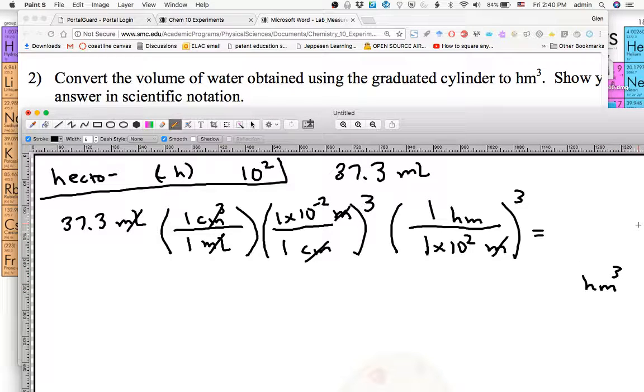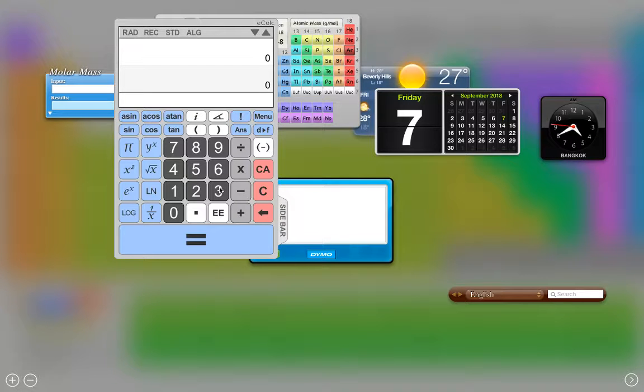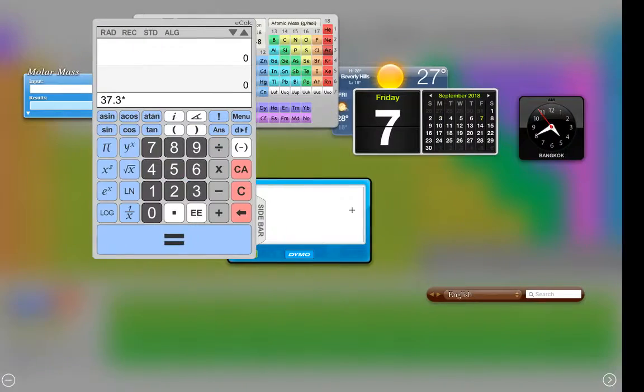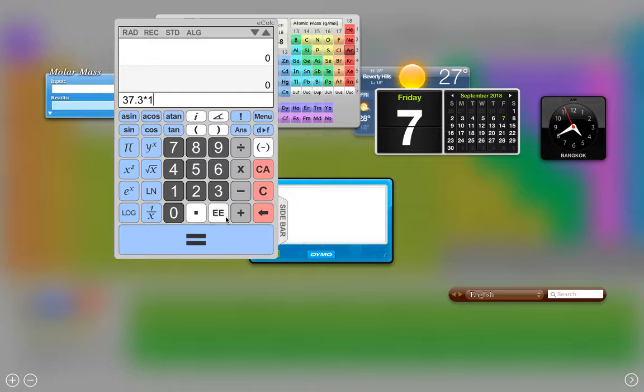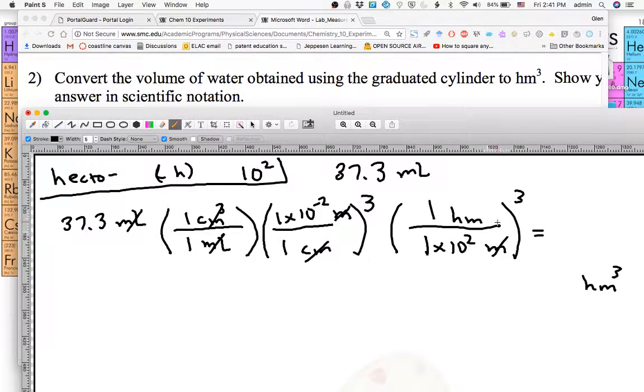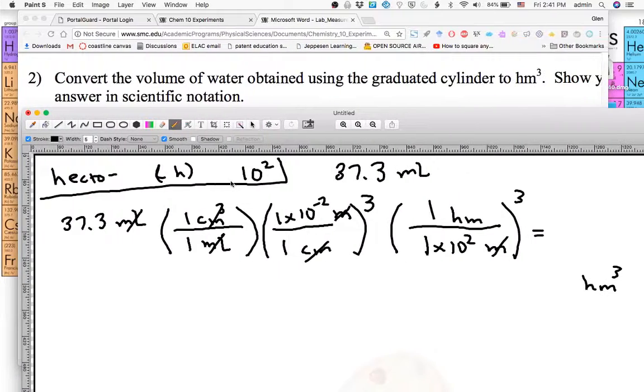Now let me use the calculator. 37.3 times 1e negative 2 cubed, divided by 1e 2 cubed. And I get 3.73 times 10 to the minus 11.